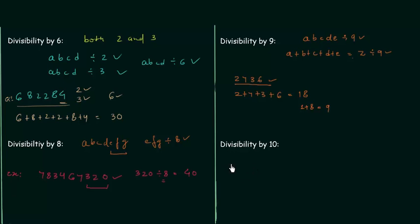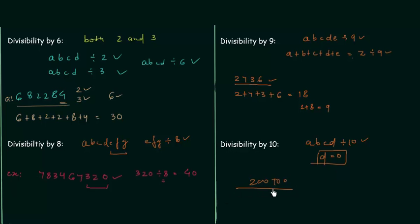The last divisibility in this presentation is divisibility by 10, which is very simple: a number is divisible by 10 if its unit digit is 0. So if number ABCDEFG has 0 at the units place, it is divisible by 10. In the next presentation, we will study divisibility by 11, 12, 14, 16, 24, 40, and 80.